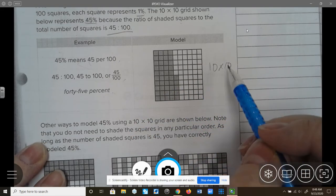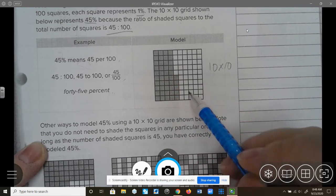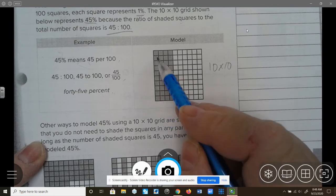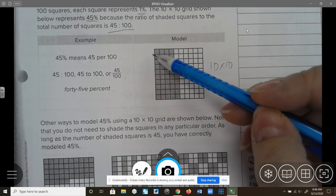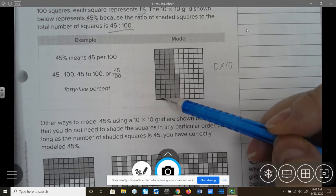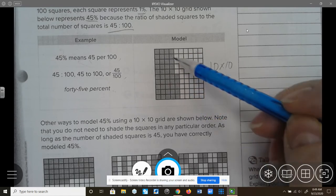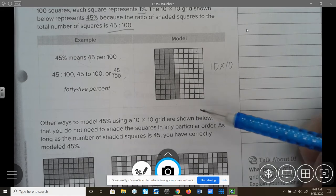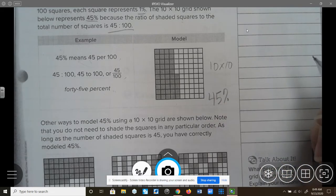The model, the 10 by 10 grid, would be shown like this for 45%. You would have a row of 10 or a column of 10, and it makes it really easy to count up to see how many are represented here. So this is 10, 20, 30, 40, and then 1, 2, 3, 4, and 5. So 45% is represented with this 10 by 10 grid.